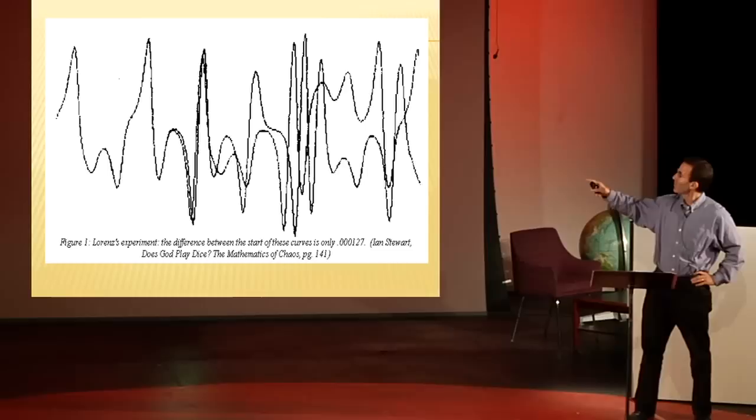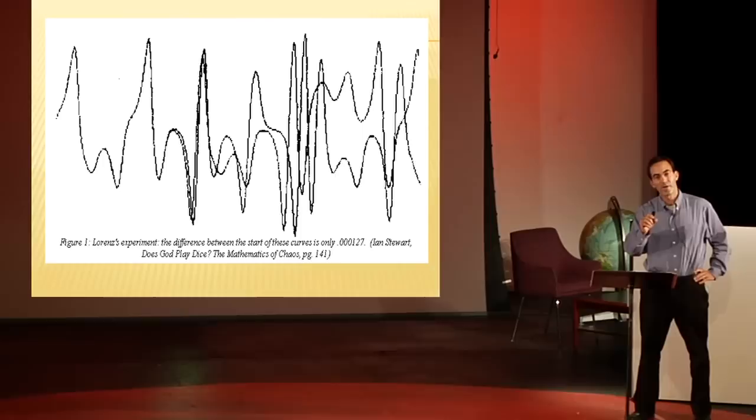In this picture, which shows one aspect of Professor Lorenz's weather experiments, there are actually, you can't see it, there are two curves from the very start, incredibly close together and they stay together for a while and then they diverge by a little bit and then they become wildly different. What does that mean?